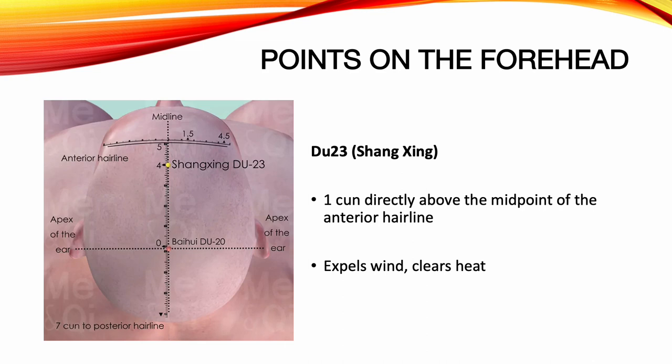Sheng Shing 223. Location: 1 wanzun directly above the midpoint of the anterior hairline. Functions: expels wind, clears heat. Indications for 223, Sheng Shing: headache, dizziness, eye pain, redness of the eyes, nasal congestion, nose bleeds, seizures, hysteria, convulsions in children, mental disorders.